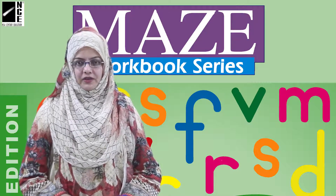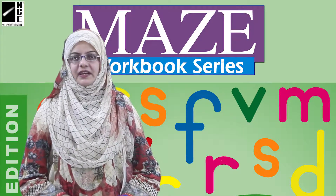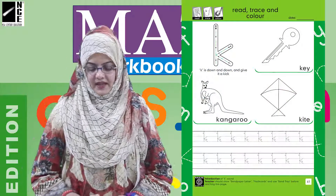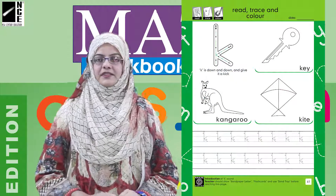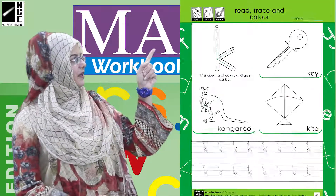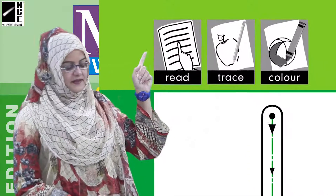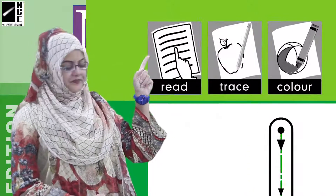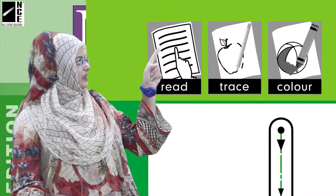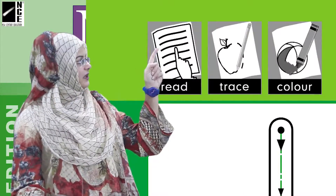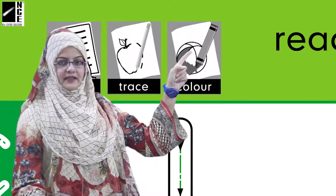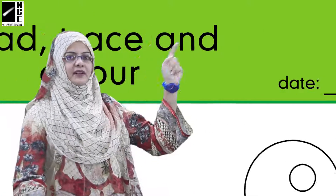So all of you take out the books English Prayer 2 and go to page number 61. Okay, let's open page number 61. There are three icons — what are they? Read, trace, and color.